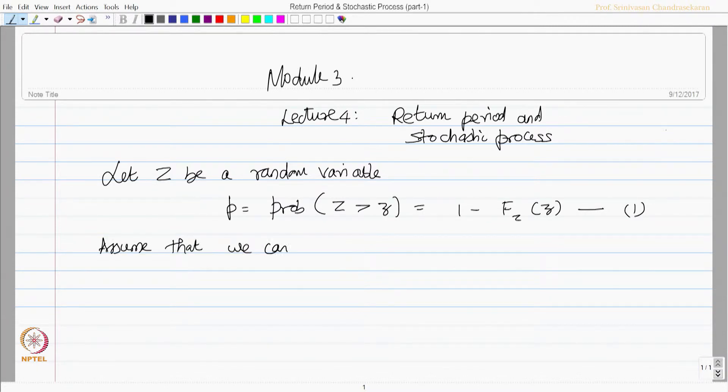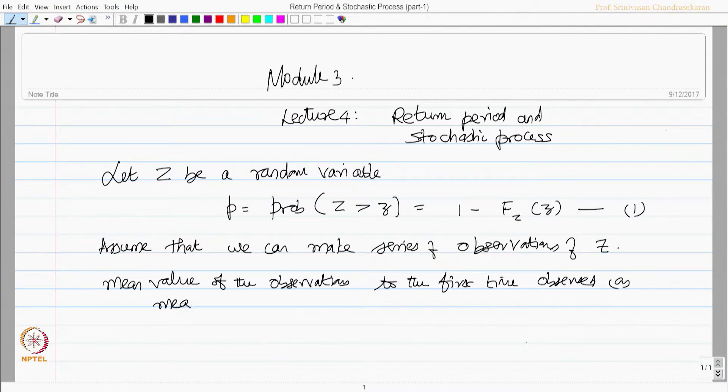Assume that we can make series of observations of z. Once you make series of observations, mean value of the observations to the first time observed or may be measured value of z exceeds z is called as return period.